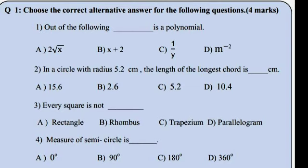Answer the following questions. This question is for four marks. First, out of the following, which is a polynomial — the answer is x plus 2. Second question: in a circle with radius 5.2 cm, the length of the longest chord is the diameter, and the answer is 10.4, which is 2 times the radius.